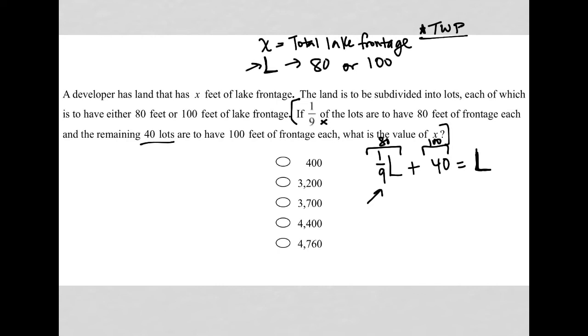When I subtract one ninth L from both sides of this equation, I get 40 is equal to, now L is the same as one L. Since I have a fraction, I can treat it as nine over nine. So nine over nine L minus one over nine L is eight over nine L. I want to isolate L, so I want to figure out how many lots do I have. So multiplying by the reciprocal of eight ninths, which is nine eighths, doing that allows me to cancel out the nine here and the eight there, so I isolate my L.